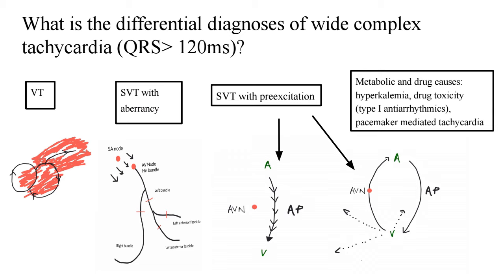Another reason is when the baseline ECG has no bundle branch blocks, but when SVT sets in, a functional right or left bundle branch block sets in. This occurs because the refractory period of one of these bundles or fascicles is surpassed during the tachycardia. When you have rapid atrial activity in the supraventricular region and it reaches these bundles, one of the bundles gets tired out and blocks, leading to a functional bundle branch block causing SVT with aberrancy.